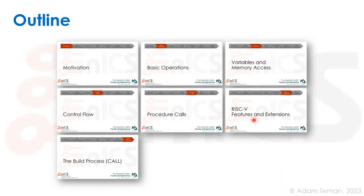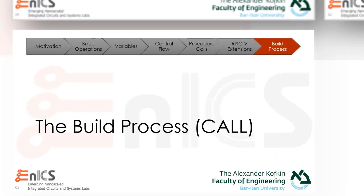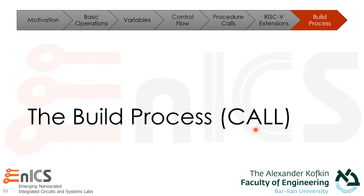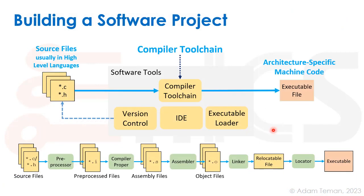Stepping back from the RISC-V specific features and extensions, we can now summarize by revisiting the build process. Building a software project starts with source files in high-level languages — .c files containing C code and .h header files for library functions — and uses the compiler toolchain to turn this C code into architecture-specific machine code: an executable file we can load into instruction and data memory.